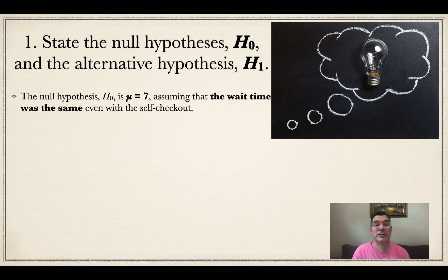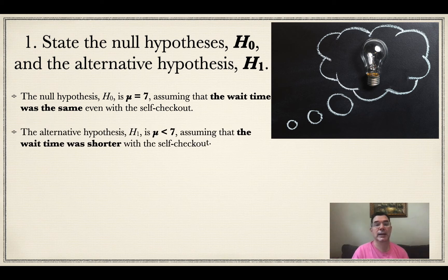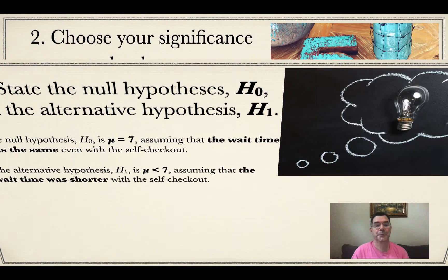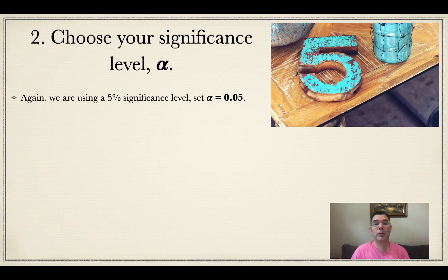The null hypothesis means that nothing has changed. So the mu is still going to be seven, just like it was, meaning that after the self-checkout, nothing changed. The average wait time was still seven. The alternative is that the average wait time is now less than seven because of the self-checkout. We were told that our significance level was five percent, so that means alpha is 0.05.